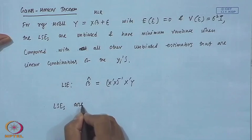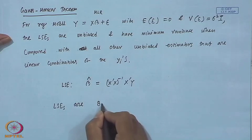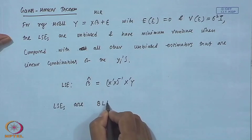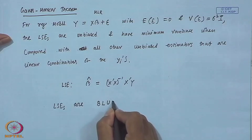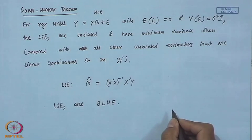The estimator obtained by using the least square technique is the best among linear unbiased estimators. So these least square estimators are the Best Linear Unbiased Estimators — these are called BLUE. This is what the Gauss-Markov theorem states.